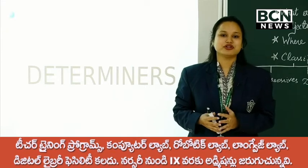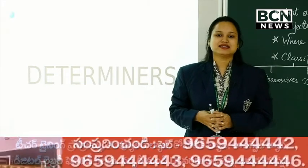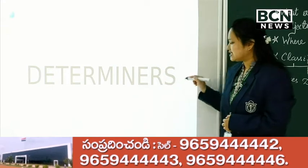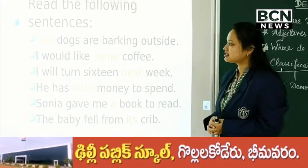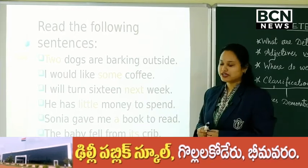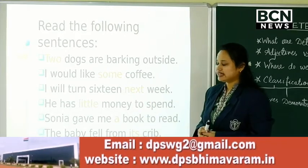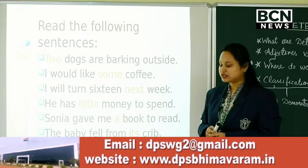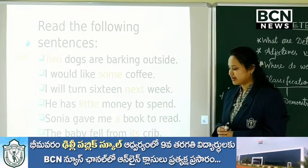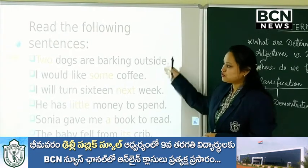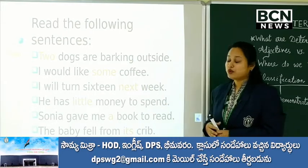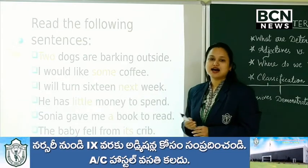What are determiners? Before we start on to the topic, let's see how we use the determiners. Where do we find the determiners? Let's have a look at these sentences: Two dogs are barking outside. I would like some coffee. I will turn 16 next week. He has little money to spend. Sonia gave me a book to read. And the last: the baby fell from its crib. If you go through these sentences, you will mark certain words highlighted in orange color. Only those words are determiners.